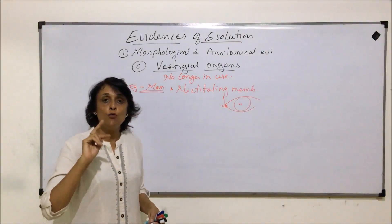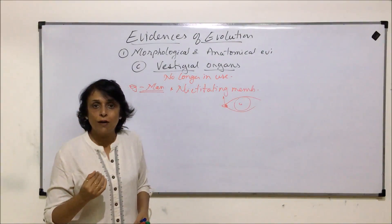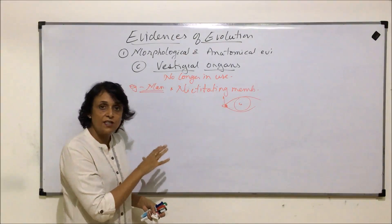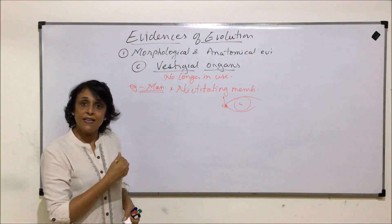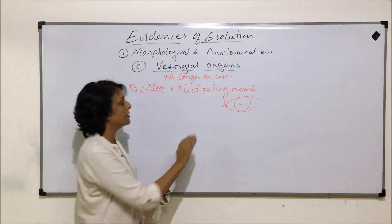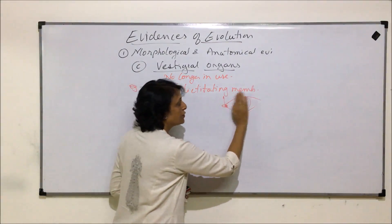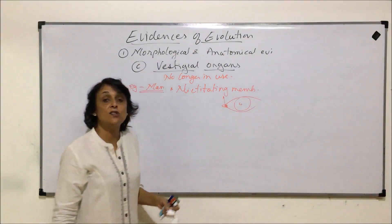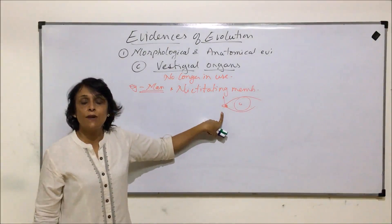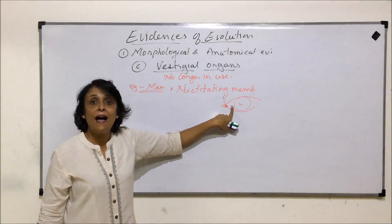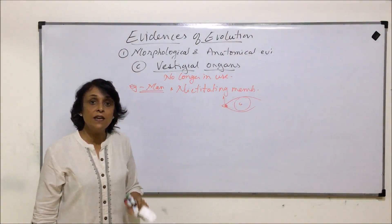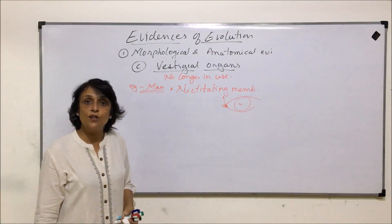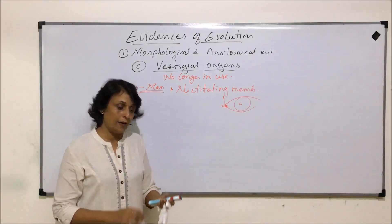We have two eyelids — the upper eyelid and the lower eyelid — and this third eyelid, which is vestigial in our case, is functional in aquatic organisms. It moves from one side to the other and is transparent, protecting the eye when the organism is in water. This means that our ancestors were probably aquatic.